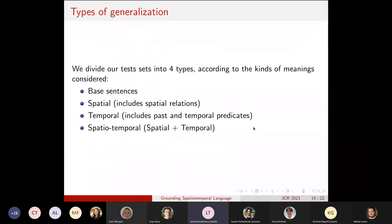So we divide our test sets, which are composed of new unseen sentences, according to the kinds of meanings that they consider. So first we have the base sentences, which have no spatial or temporal meanings or concepts in them. The spatial ones, which include the spatial relations. The temporal ones, which include the past predicates and also time interval or temporal predicates, such as shake and grow. And the spatiotemporal ones, which is spatial and temporal.